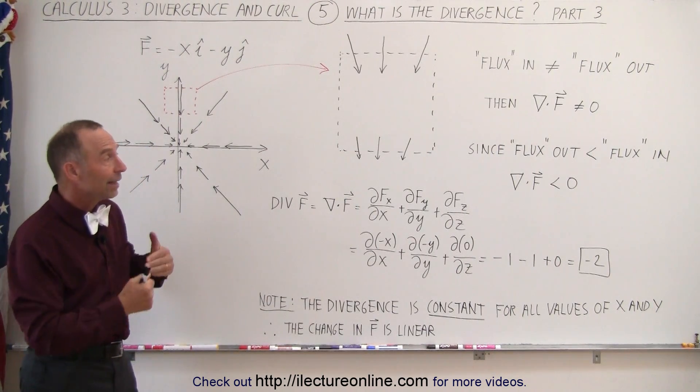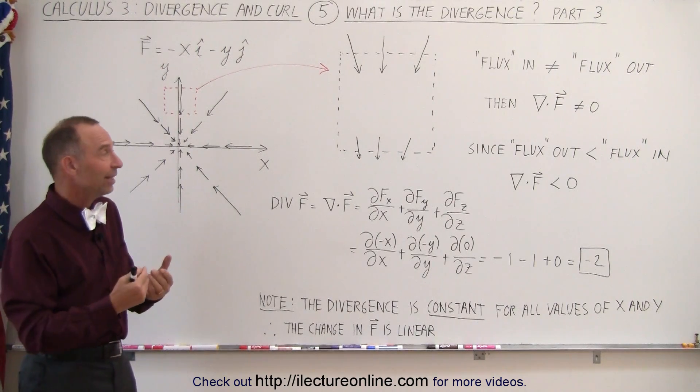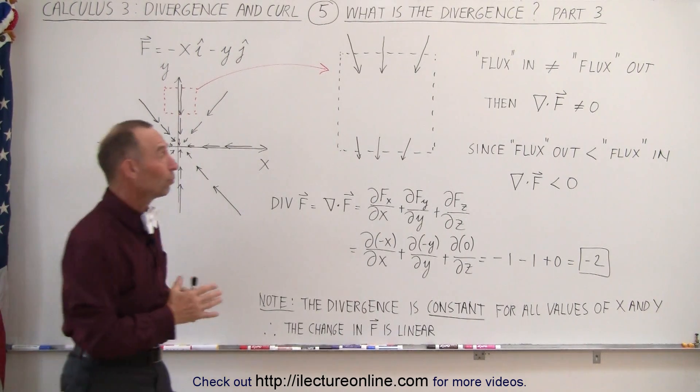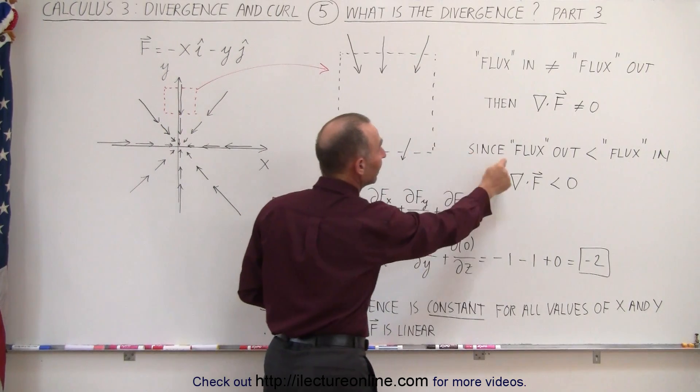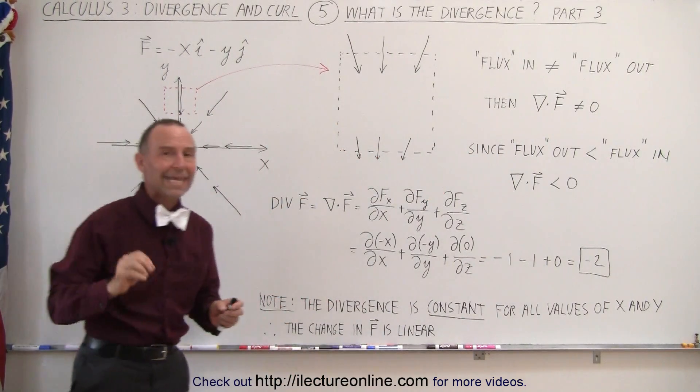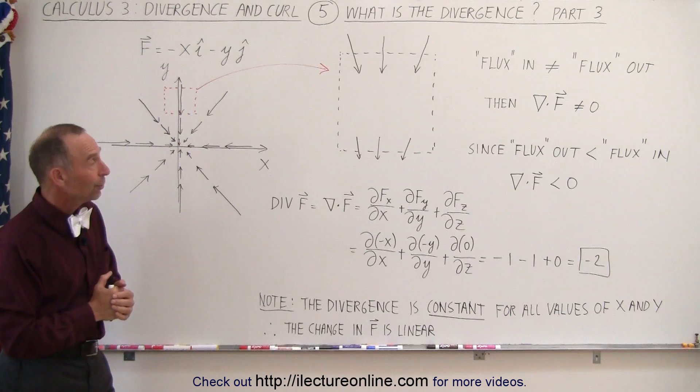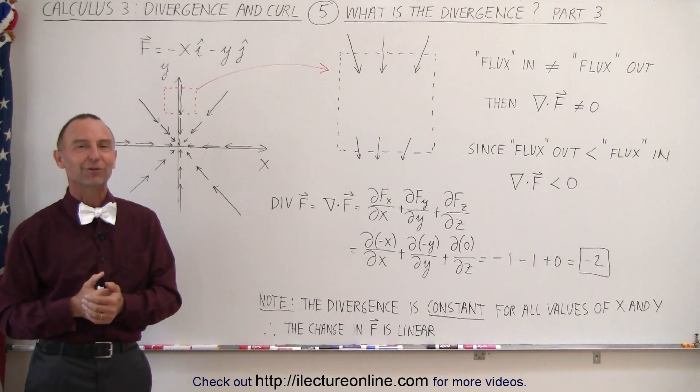But again, here you can see that if the flux out is less than the flux in, as if flux is being absorbed, fluid is being absorbed, then you know that the divergence will be a negative quantity. And that's how we know what we mean by a divergence.